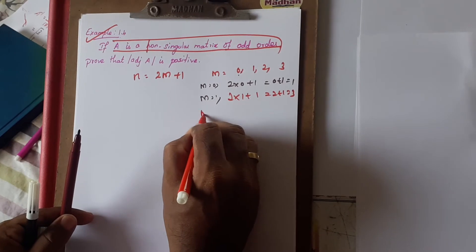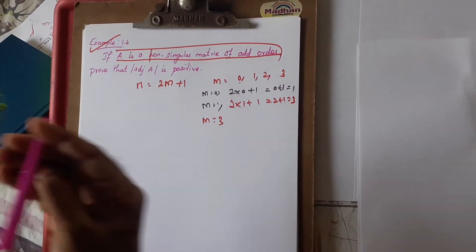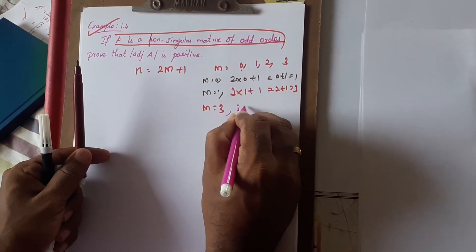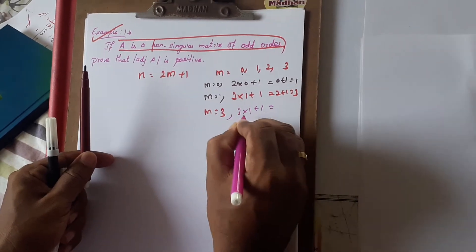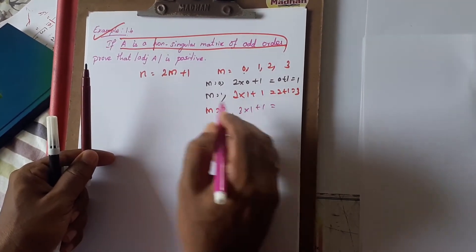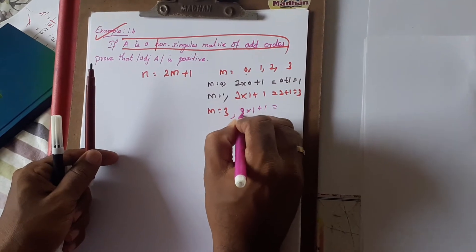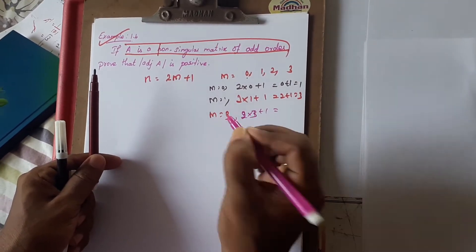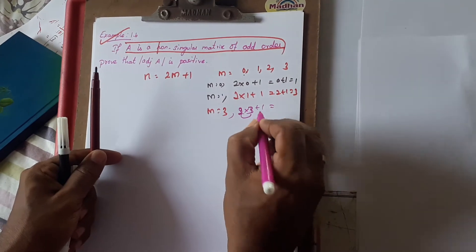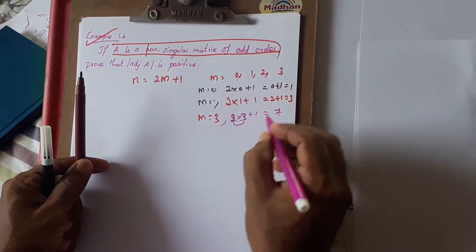Next one, M equals 3 means... sorry, M equals 3 means 2 times 3 plus 1. That means 2 times 3 is 6, 6 plus 1 equals 7.